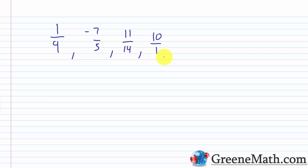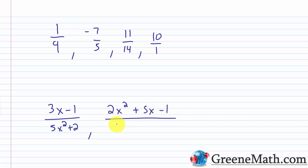We think about these as rational numbers, but more practically we just call them fractions. In algebra, we have an algebraic fraction, which is known as a rational expression. A rational expression is the quotient of two polynomials where the denominator is not zero. Something like (3x − 1) over (5x² + 2) — one polynomial over another. As another example, (2x² + 5x − 1) over (3x⁴ + x + 7). You have a polynomial in the numerator and a polynomial in the denominator, giving us a rational expression.